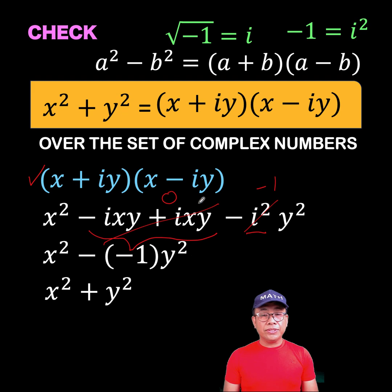So for our answer to our follower, the answer is x squared plus y squared is factorable over the set of complex numbers. And its factors are the quantity x plus i y times the quantity x minus i y. However, over the set of real numbers, x squared plus y squared is not factorable. Thank you very much. This is Land of the Assistant. And we hope to see you again in our next video. Bye for now.